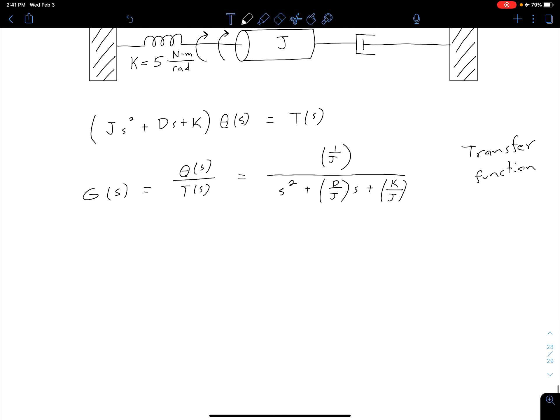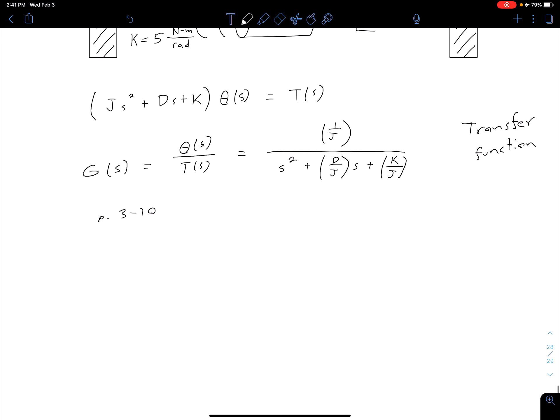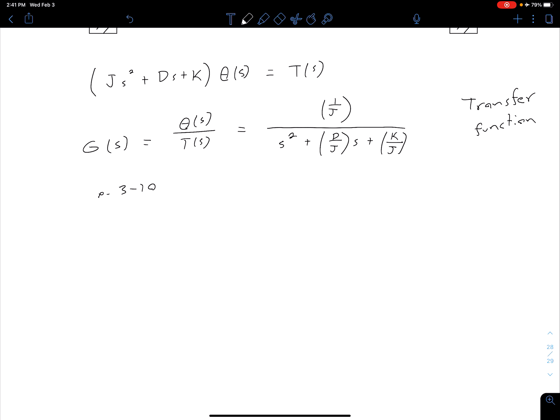Now what we want to do is compare this, our transfer function, to the general equation that we've seen before. You can see that on page 3-10 in the notes. But essentially we're trying to relate this to our omega_n and our zeta values.